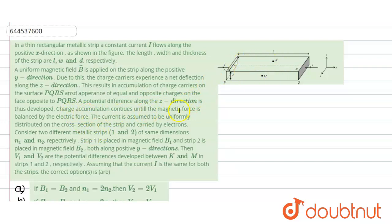Now the charge accumulation continues until the magnetic force is balanced by the electric force. Now if we want to balance this charge accumulation, magnetic force should be balanced by the electric force or these values should be equal. Now the current is assumed to be uniformly distributed on the cross section of the strip and carried by the electrons.